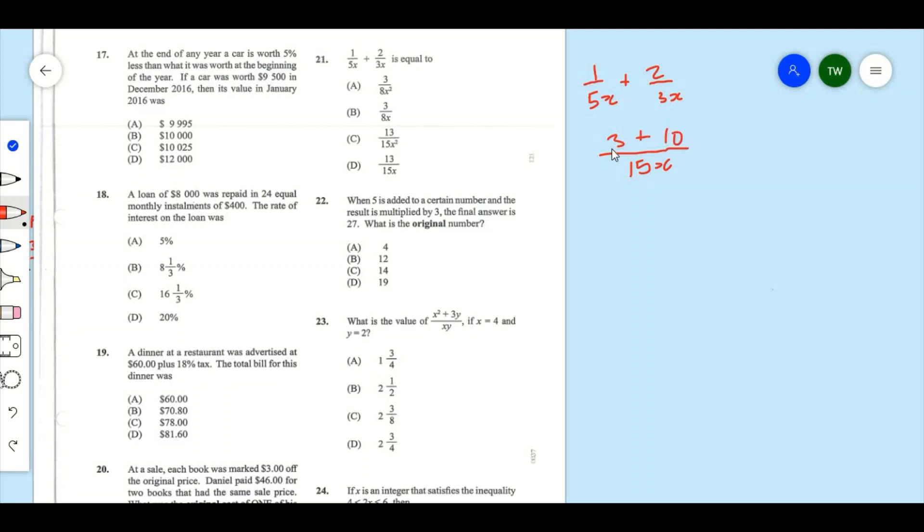And 3 plus 10, that's going to be 13 over 15, so our answer for 21 is going to be D.